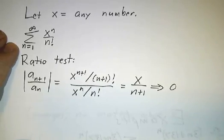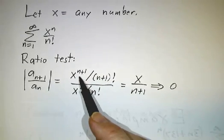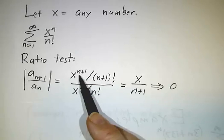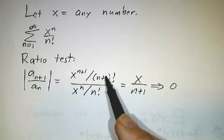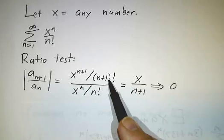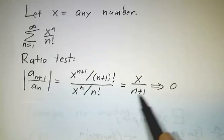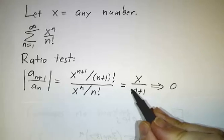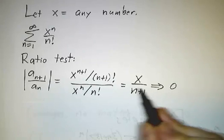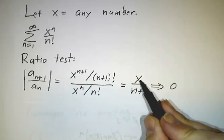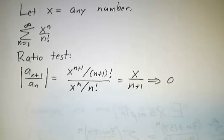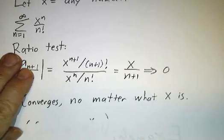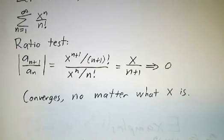If you take the ratio of successive terms, x^(n+1) divided by x^n is simply x, and n! over (n+1)! is 1 over (n+1). No matter how big x is, x/(n+1) goes to 0, because x is just some fixed number while n is getting bigger and bigger. So the ratio goes to 0, and no matter what x is, this whole thing converges.